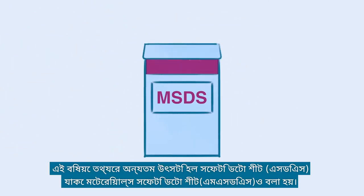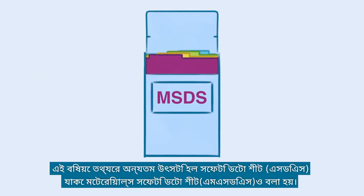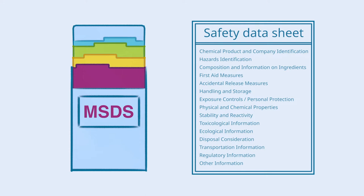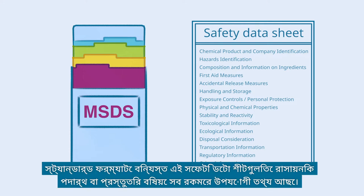In this regard, Safety Data Sheets, also known as Materials Safety Data Sheets, are the key source of information. Compiled in a standardized format, these Safety Data Sheets contain all kinds of helpful information about the chemical substance or formulation.